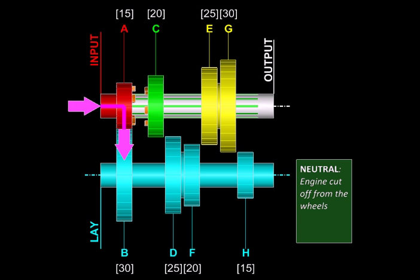So here is our gearbox in neutral where the power is flowing from the engine to the input shaft and via this engagement to the lay shaft. But none of the gears on the lay shaft is engaging with any gears on the output shaft, so the engine and wheels are cut off from each other.